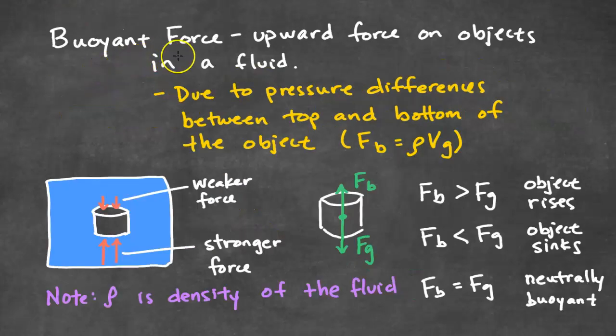Now, we'll take a look at the buoyant force, which is an upward force on objects in a fluid. This is due to pressure differences between the top and bottom of the object. We already know that pressure varies with depth. So, as you go deeper and deeper down, you have more pressure. Here, we have a cylinder. The top of the cylinder has less pressure than the bottom of the cylinder. And since pressure is related to force, more pressure, more force.